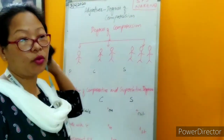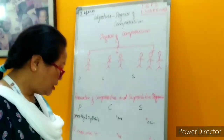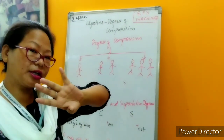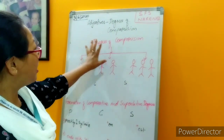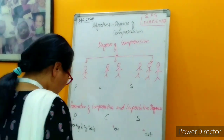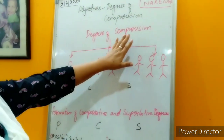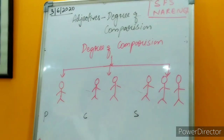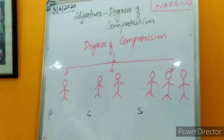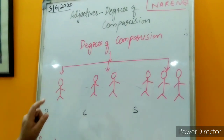Now, degree of comparison — what do you understand by degree of comparison? There are three degrees of comparison. I am going to explain to you with the help of this picture. In degree of comparison, there are three forms. When you are not making a comparison, when there is only a single noun, the base form — this is called positive degree.